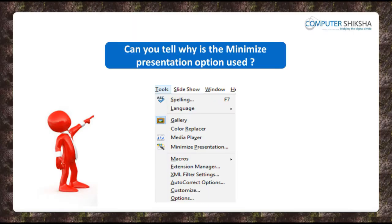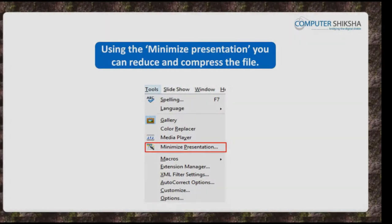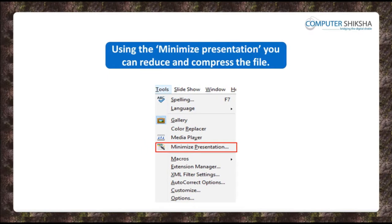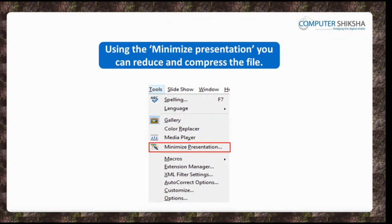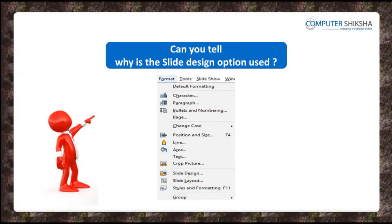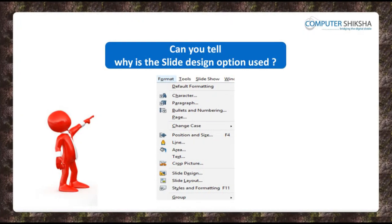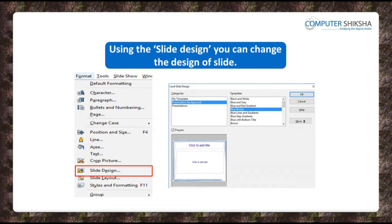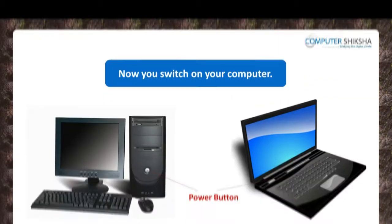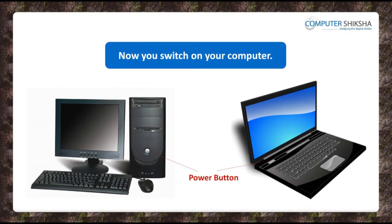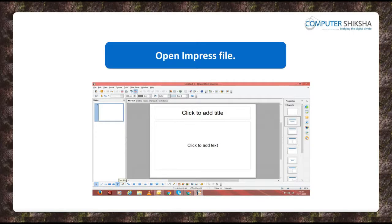Can you tell why is the minimized presentation used? Using this option, you can reduce the size of your presentation. You can compress your image files, and you can see a summary of your Impress presentation. Can you say why we use the slide design option? Using the slide design, you can change the design of your slide. Now, all of you switch on your computer, and using any of the methods taught to you, open the Impress file.